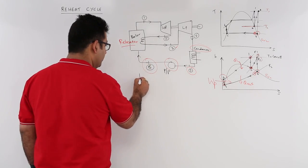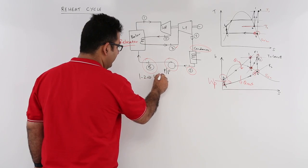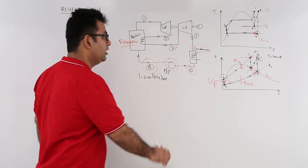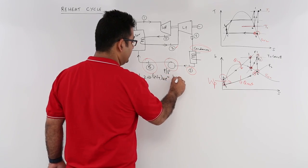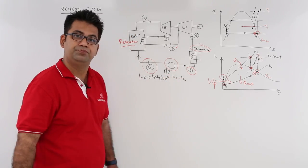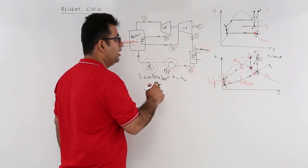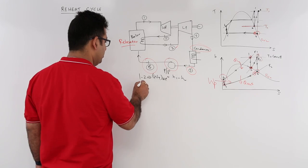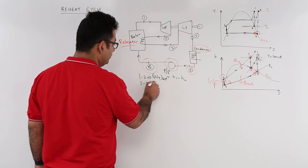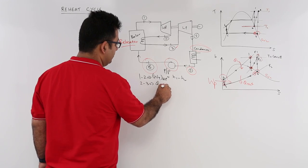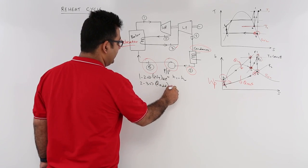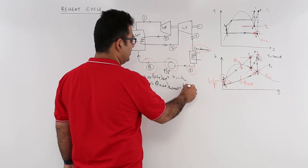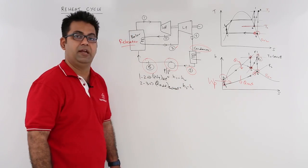Looking at this once again: 1 to 2 is turbine work at high pressure, which is the enthalpy difference between state 1 and state 2. Then you have some reheat addition, so 2 to 3 is Q addition in the reheating process, which is the difference in enthalpies at state 3 and state 2.